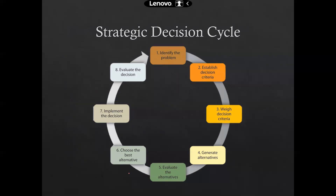This is how a strategic decision cycle works. You identify the problem, then establish a decision criteria, weigh the decision criteria, generate alternatives, evaluate the alternatives, choose the best alternative, implement the decision, and evaluate the decision. In the next lecture, we are going to see every step of this. We are going to implement Analytical Hierarchy Process — AHP — which is going to identify the problem, establish the decision criteria, weigh criteria, generate and evaluate alternatives, choose the best alternative, and so on, until the decision is evaluated. It is a very interesting topic.